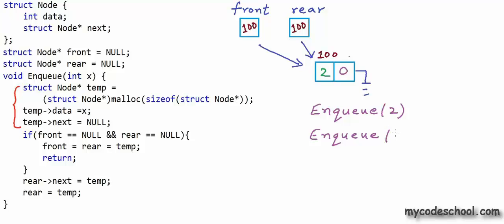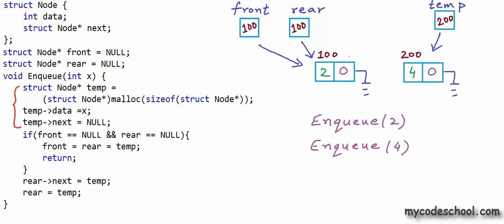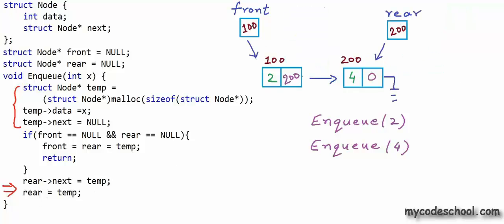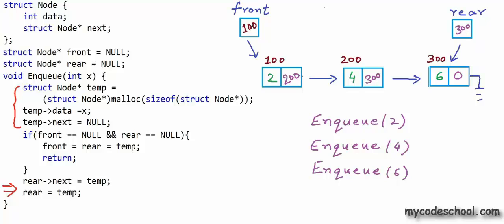We call enqueue again passing number 4. A new node is created — say at address 200. This time the queue is not empty, so we go to the else branch: we set the next field of the node at address 100 to 200, building the link, then update rear to 200. That is how the queue looks after the second enqueue. Enqueuing number 6 at address 300 follows the same steps, giving us a three-node queue.